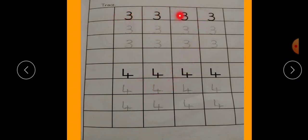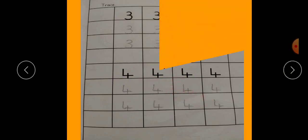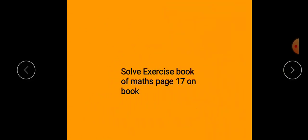Which number is this? Number 3. And which number is this? Number 4. Three and four. Now solve exercise book of Maths page 17 in your book. Take care of yourself, remember me in your prayers. Allah Hafiz.